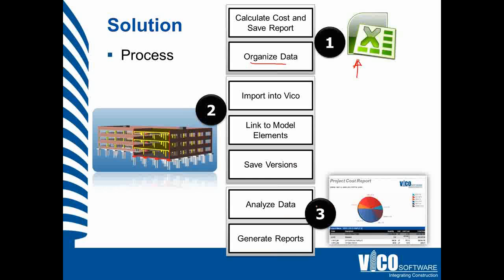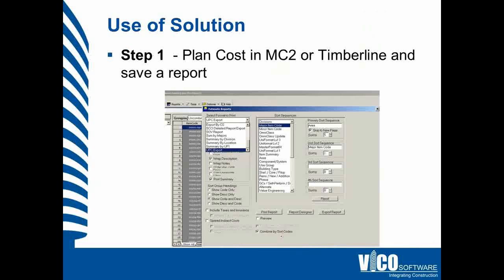That is really part of the third phase, which is to analyze the data and generate the reports. Step one is to plan the cost in MC squared or Timberline. At the end of that, you want to generate a report. In the case of the MC squared option, we'll use the UPC export format. An important thing to consider is to combine by sort codes to avoid having similar line items multiple times in the Excel output.